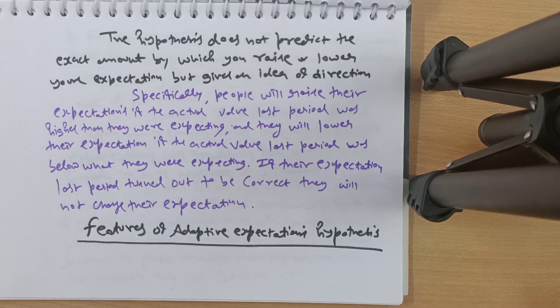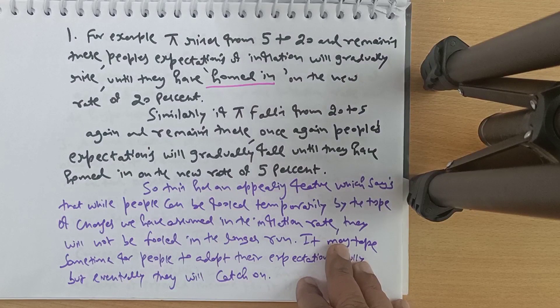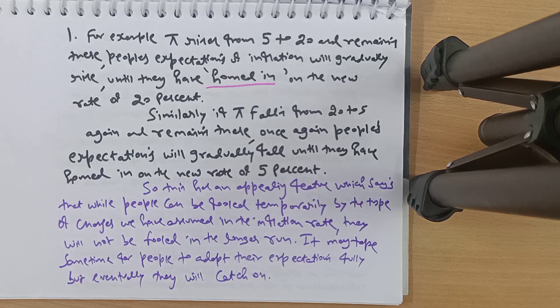If last year you expected 10% but inflation came in at 20%, you revise upward. If you expected 10% but inflation was only 4%, you revise downward. People raise their expectation if the actual value last period was higher than expected, and lower it if it was below expectations. If their expectation turned out correct, they will not change it. If inflation rises from 5% to 20% and stays there, expectations gradually rise to 20%. Similarly if it falls back, expectations gradually fall.